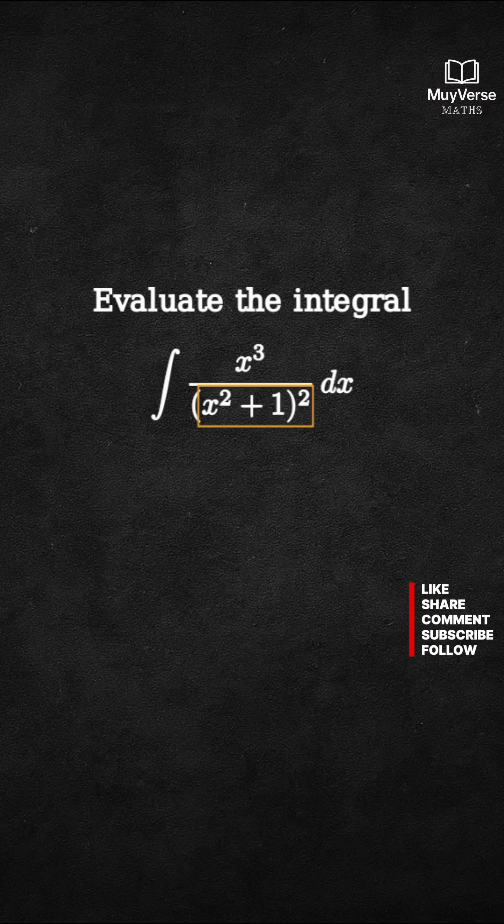Notice the repeated quantity x squared plus 1 in the denominator. To simplify, let u equals x squared plus 1, so that du equals 2x dx. This substitution matches the highlighted denominator.